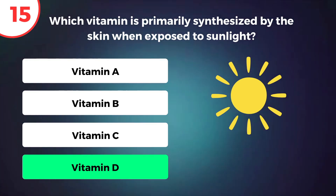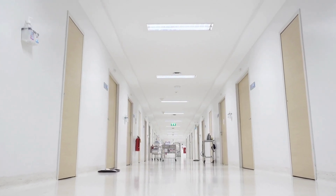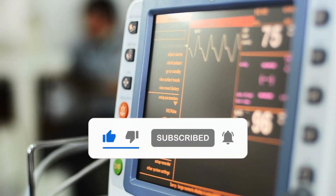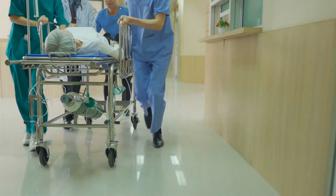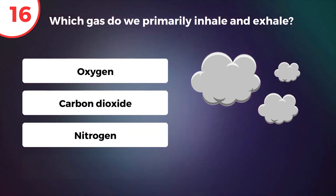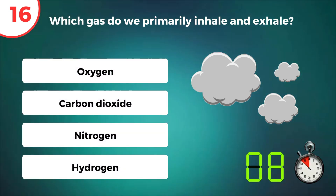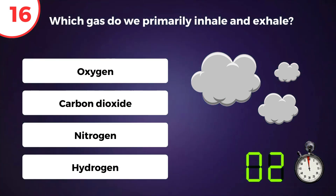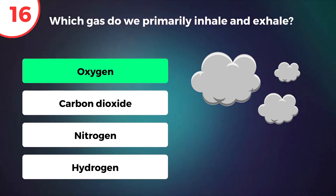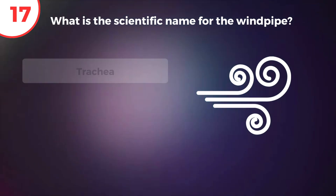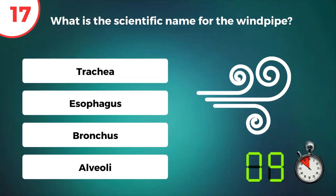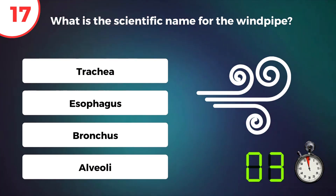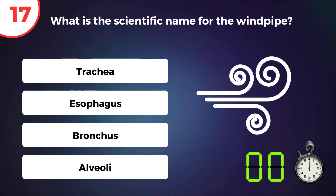Vitamin D. How many have you guessed right so far? Before moving on, please like this video and subscribe to this channel if you don't want to miss new videos from MedQuiz. Now let's continue. Which gas do we primarily inhale and exhale? Oxygen. What is the scientific name for the windpipe? Trachea.